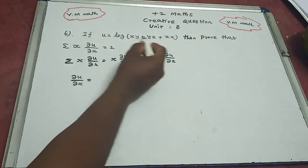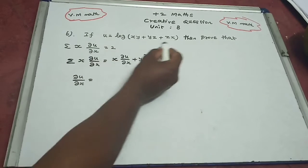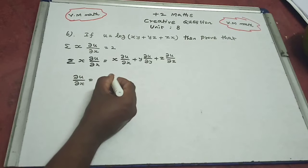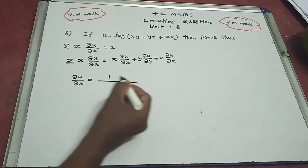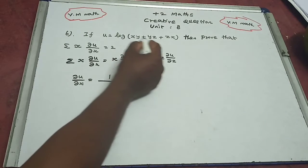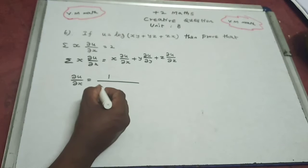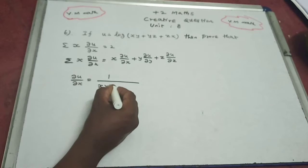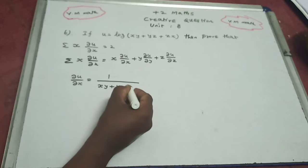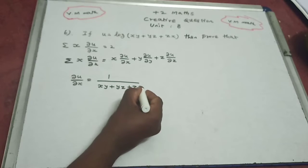The derivative of log is one divided by x. The differentiation gives 1/(xy + yz + zx) times (y plus z), which is y plus z over xy plus yz plus zx.